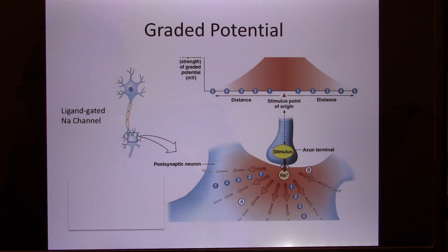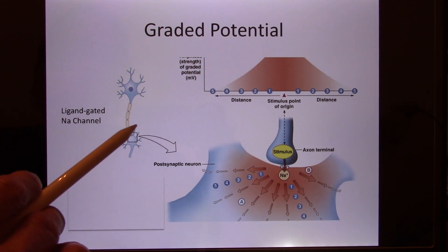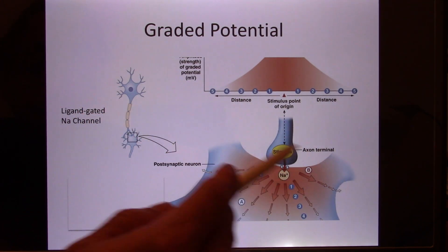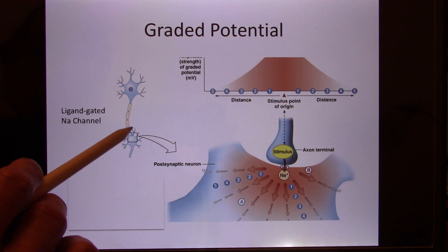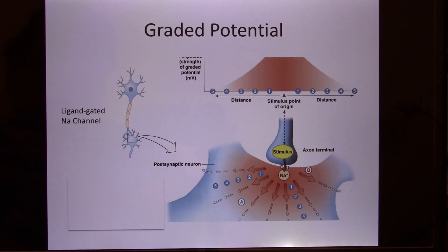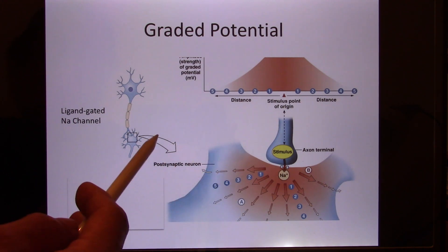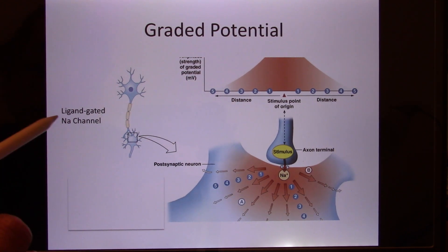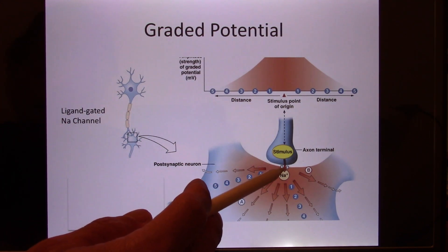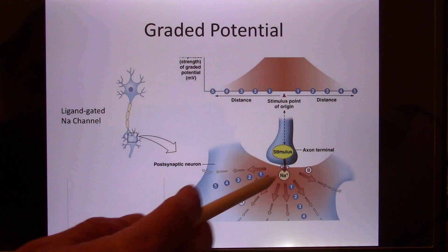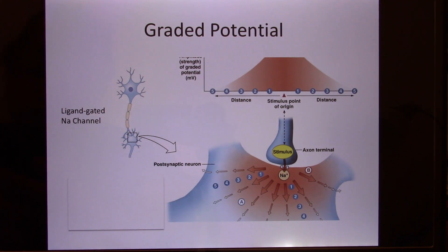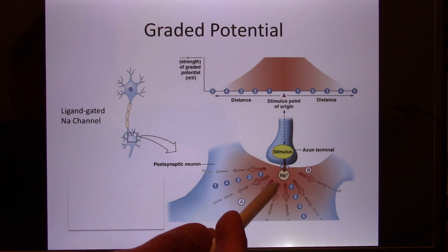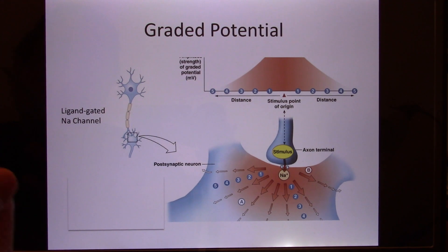When neuron A talks to neuron B — and your brain has 100 billion neurons in a neural network — the neuron releases neurotransmitters at the synapse. The neurotransmitter binds with receptors, usually in the dendrite or cell body. These receptors are ligand-gated sodium channels. The neurotransmitter is the ligand; when it binds, sodium flows in (high outside, low inside), making the inside more positive, increasing sodium permeability per the GHK equation.